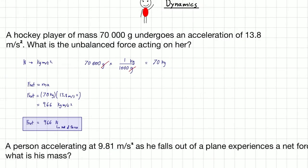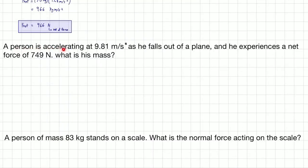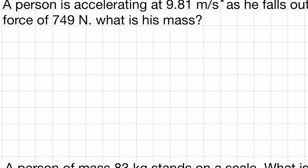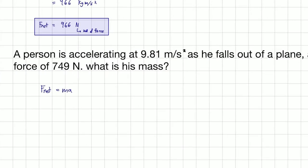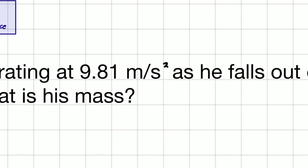Now let's move on to question two. A person is accelerating at 9.81 meters per second squared as he falls out of a plane. And he experiences a net force of 749 newtons. What is his mass? Once again, we're going to be using the formula net force is equal to mass times acceleration.